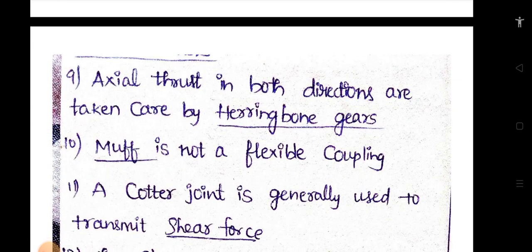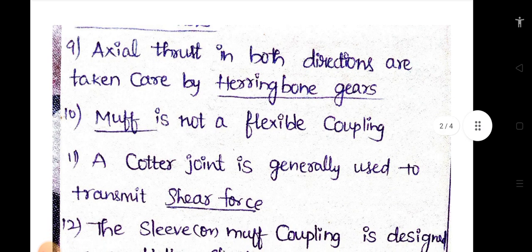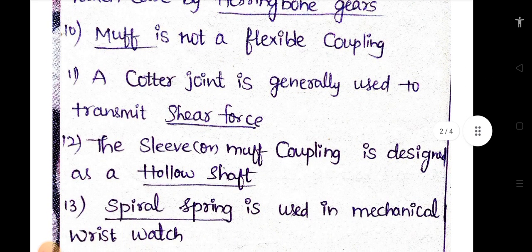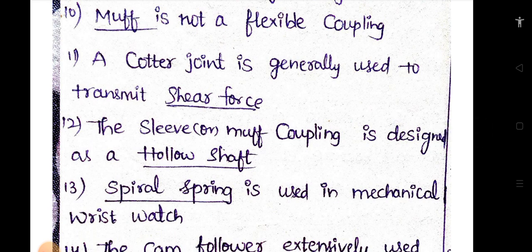Axial thrust in both directions are taken care of by herringbone gears. Muff is not a flexible coupling. A cotter joint is generally used to transmit shear force. The sleeve or muff coupling is designed as a hollow shaft.